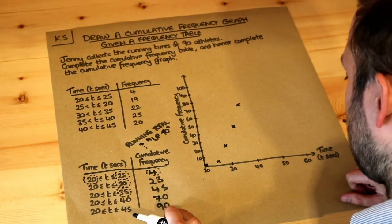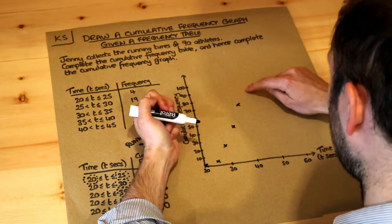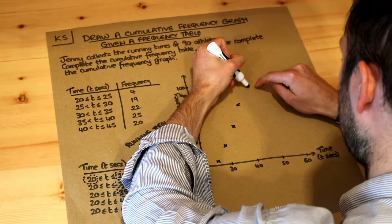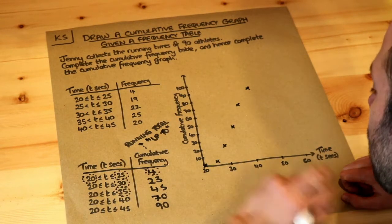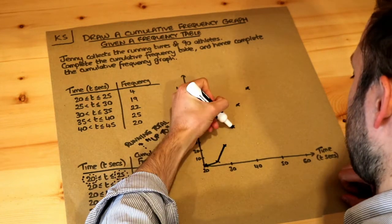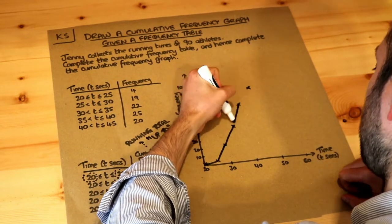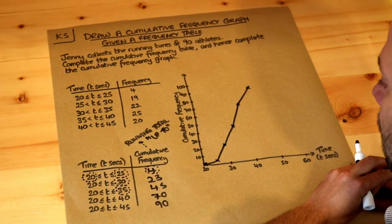Then finally we've got 90 people with a time of up to 45 so 45, 90 is going to be up here. And then remember we can either join these up with a smooth curve or we can join them up with straight lines between these points which I personally prefer but you can use either way, and that is the final cumulative frequency graph.